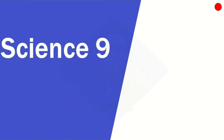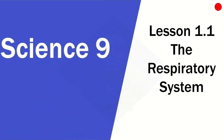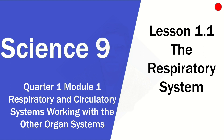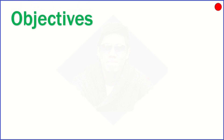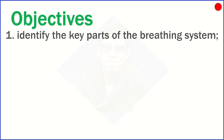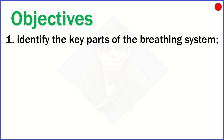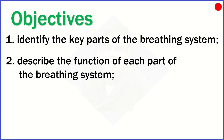Science 9, Lesson 1.1: The Respiratory System. Here are our objectives. Number 1, identify the key parts of the breathing system. Number 2, describe the function of each part of the breathing system.